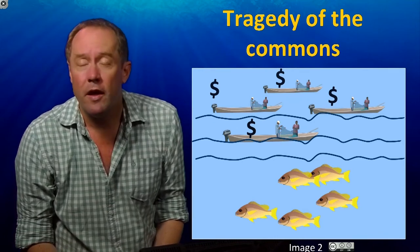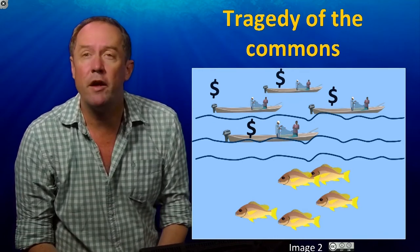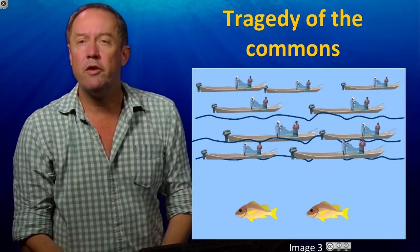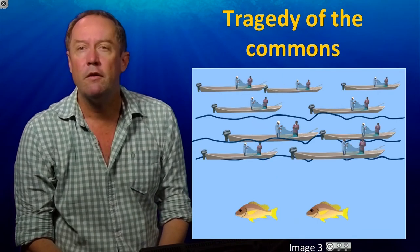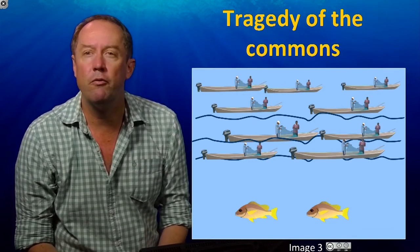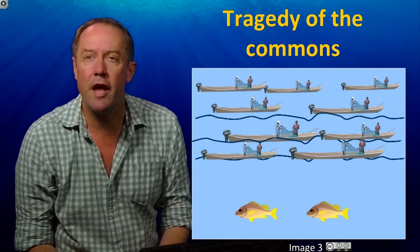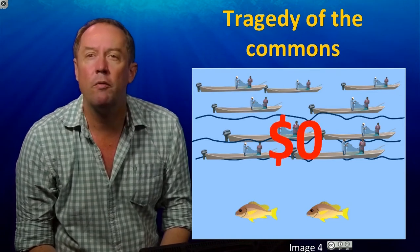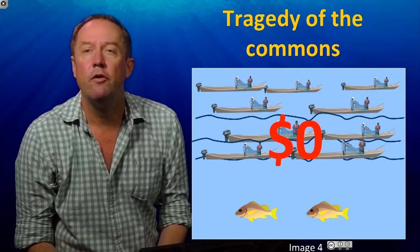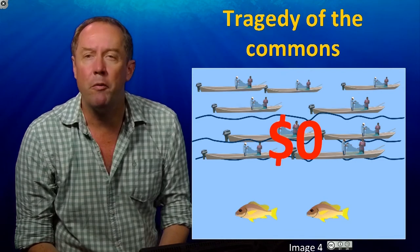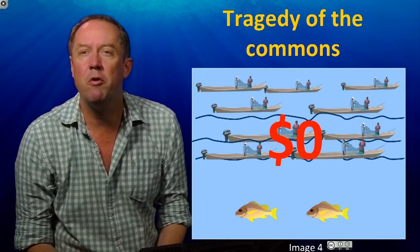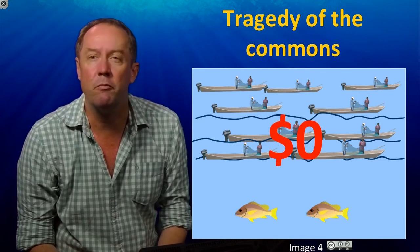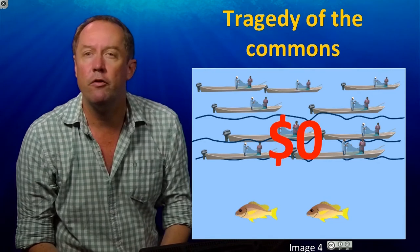And then, even while they're making some profit — but not much — more people enter the fishery. At this point, the fish stock is almost completely collapsed. Nobody's making hardly any money at all. This is what is called the tragedy of the commons: because nobody was regulating the system, what would have been a productive system is now useless.